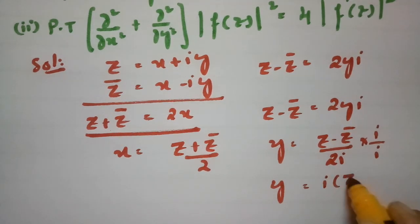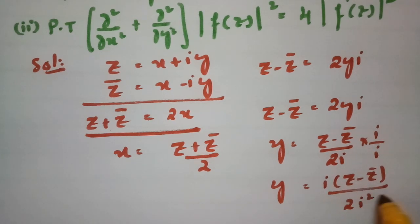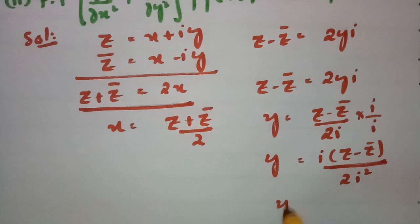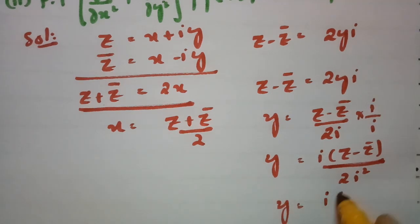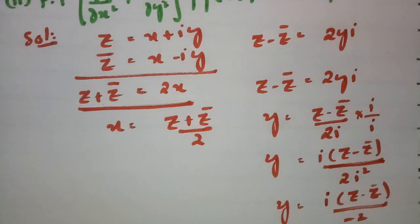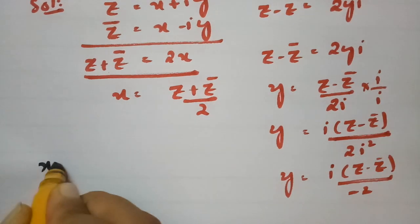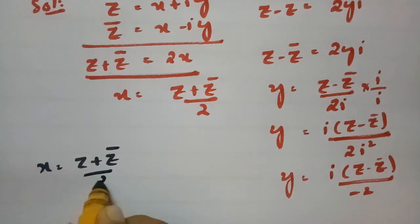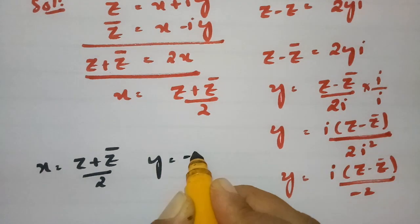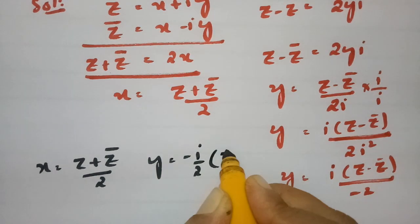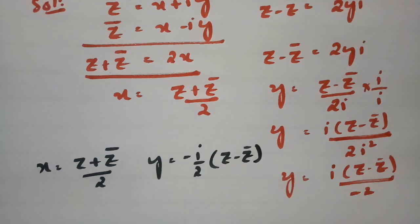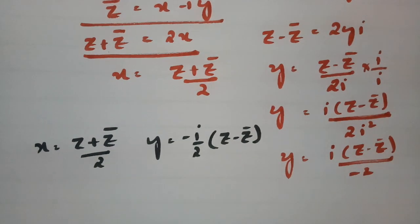Multiplying through, since i² = −1, we get y = i(z − z̄)/(2i²) = i(z − z̄)/(−2). So our x value is (z + z̄)/2 and our y value is (−i/2)(z − z̄). We now have our two values, x and y.